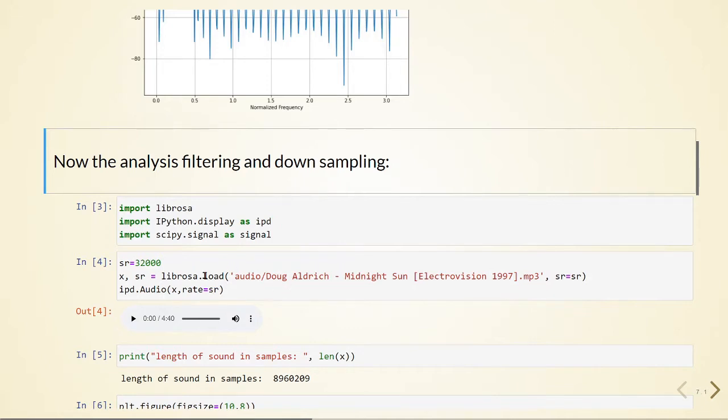So we are loading with Librosa and we are playing back with IPython Display. And we are using the sampling rate of 32 kHz and this is how it sounds.